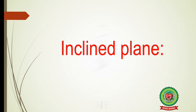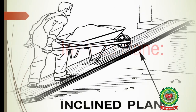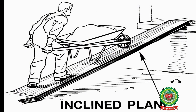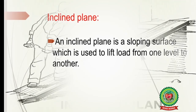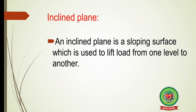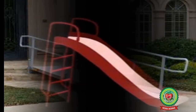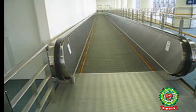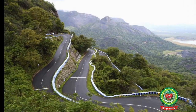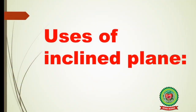The next topic is the inclined plane. What is an inclined plane? As you can see, an inclined plane is a sloping surface with two ends at different heights, used to lift a load from one level to another. Note down this definition: an inclined plane is a sloping surface which is used to lift load from one level to another. Examples include a ramp, a slide, an escalator, and roads on hilly areas.